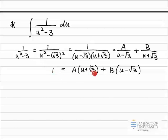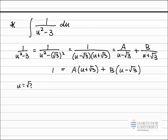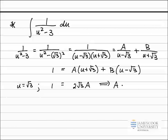In this one-line equation I need to solve for A and B. The easiest way is the cover-up method. To solve for A, I cover up B by choosing u equal to square root of 3, which makes the B term zero. Substituting that into the equation: 1 equals 2 root 3 times A plus 0, so A equals 1 over 2 root 3.